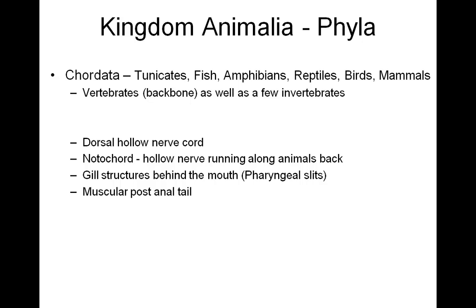And then finally, we have Phylum Chordata — my tunicates, fish, amphibians, reptiles, birds, and mammals. Most animals in this group are vertebrates because they have a backbone, but there are a few that have rudimentary structures or no backbone at all — those are my invertebrates. There are four characteristics that animals have in Phylum Chordata: a dorsal hollow nerve cord, a notochord running along the animal's back, gill structures behind the mouth known as pharyngeal slits, and a muscular post-anal tail.